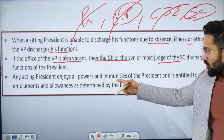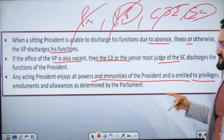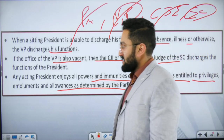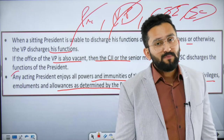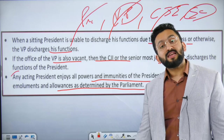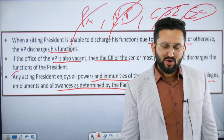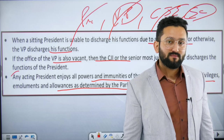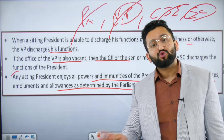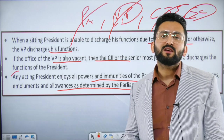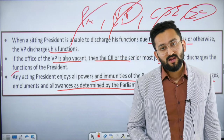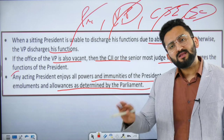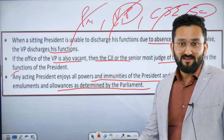Any acting president enjoys all the powers and immunities of the President and is entitled to privileges, emoluments, and allowances as determined by Parliament. However, there is a trap: if the President is ill and the VP is working as acting president, the acting president does NOT get the full salary of the President — because the President is still alive and drawing that salary. But if the position is vacant due to death, disqualification, impeachment, or resignation, then the person acting as acting president draws the emoluments and salary of the President.